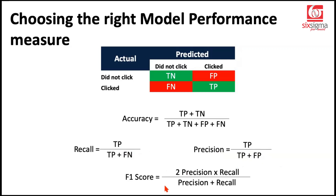That pretty much sums up how we evaluate model performance in classification scenarios. There are many other model performance measures, but confusion matrix and the metrics derived from it tend to be more popular in classification. This was an attempt to make it simpler for you. Hope you get some clarity. Thank you.